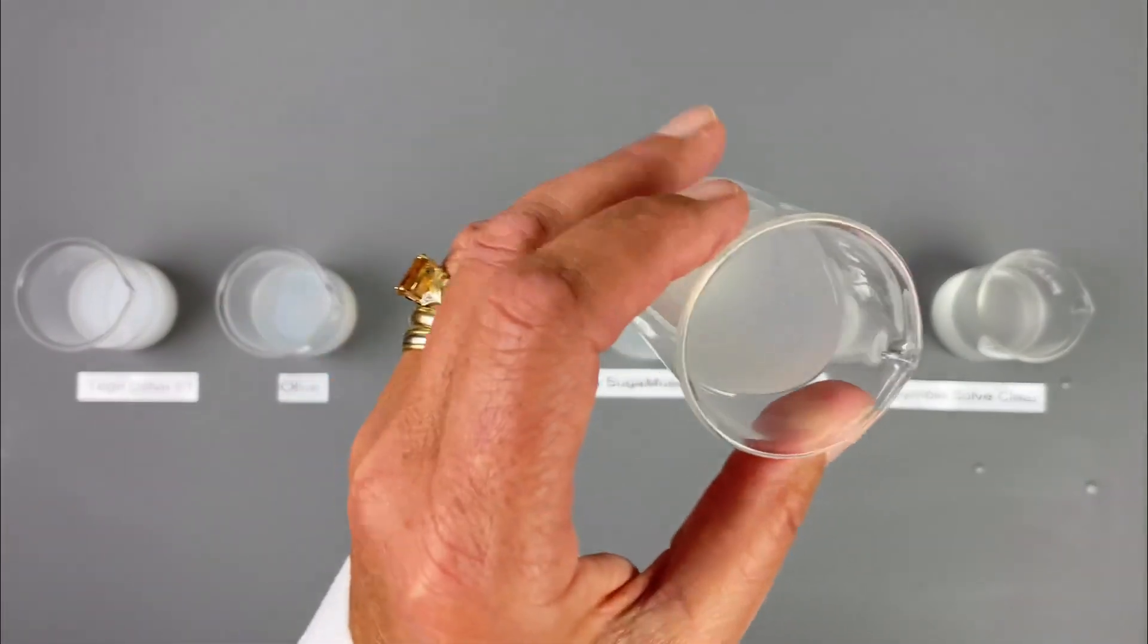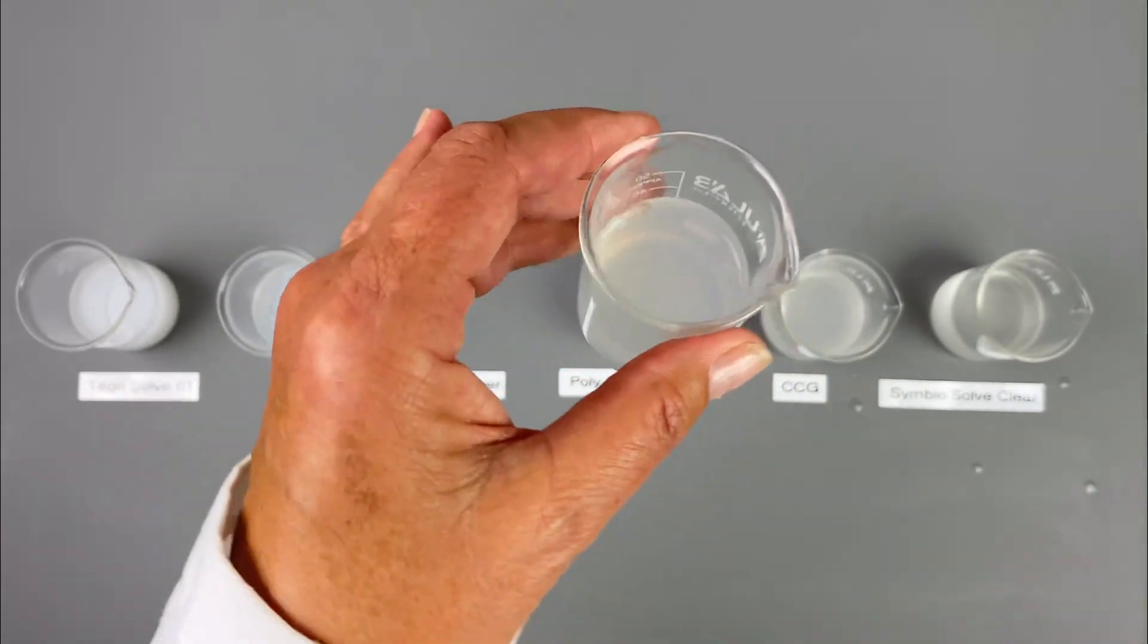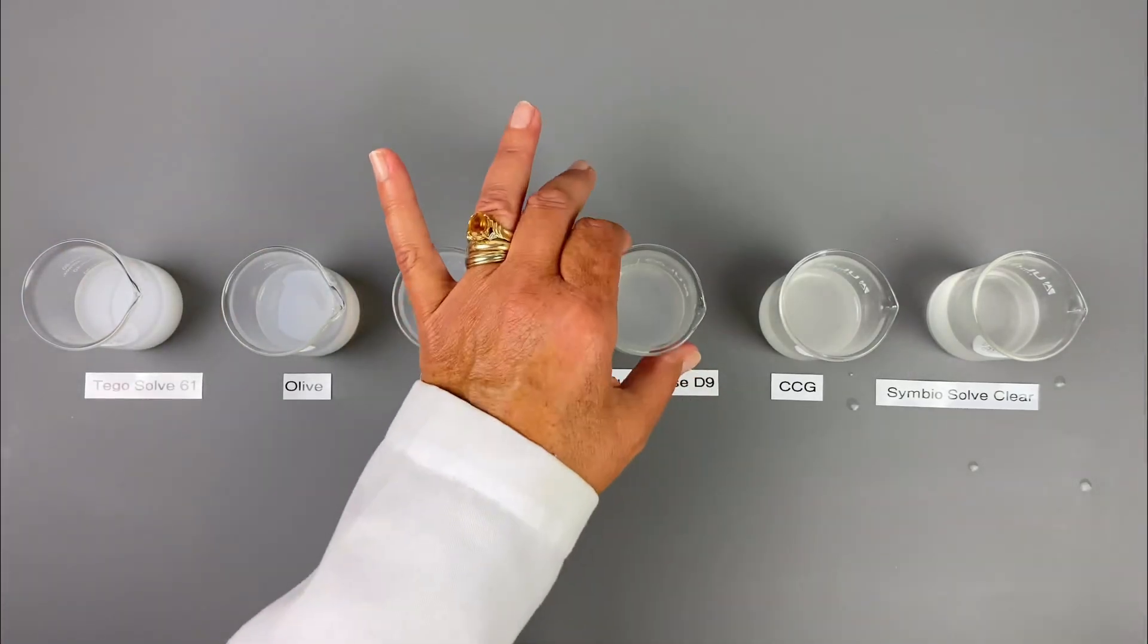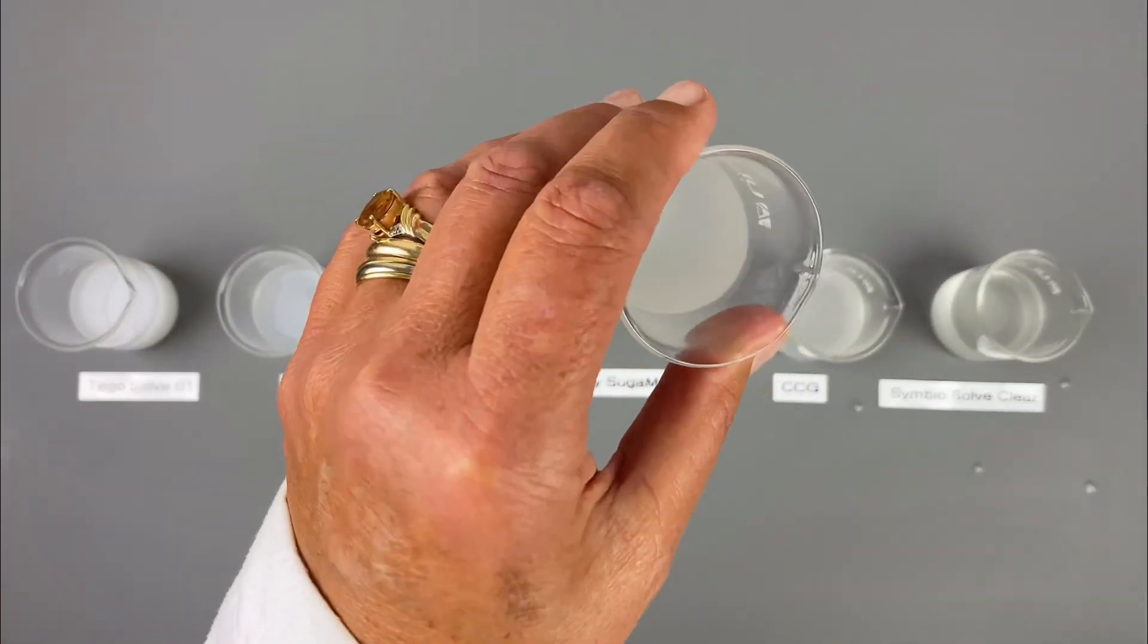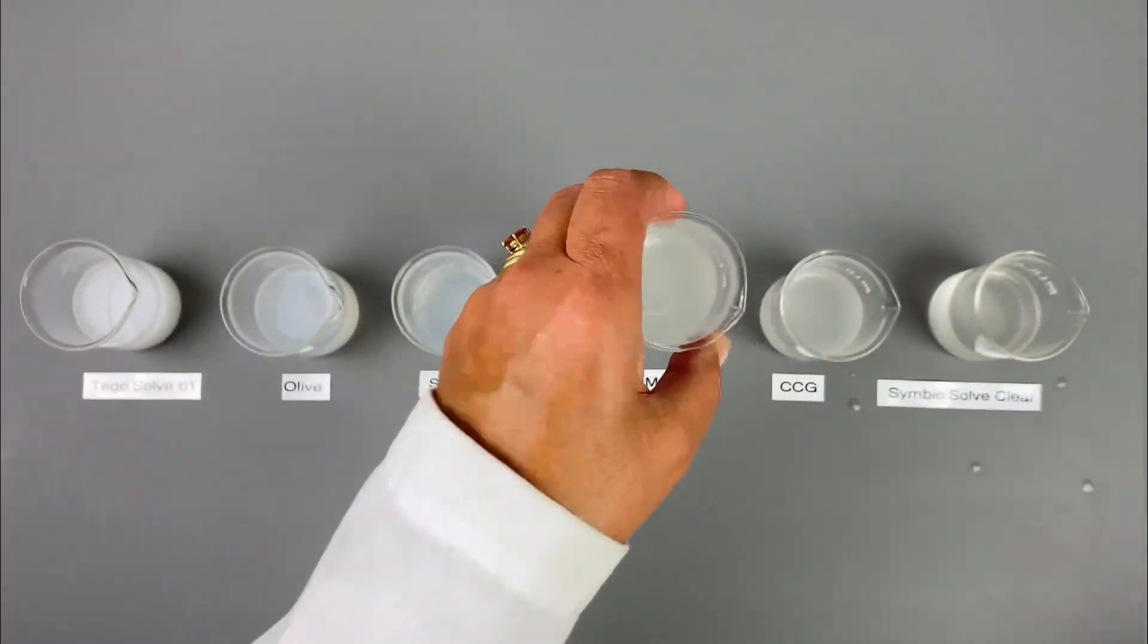The sunflower solubilizer has done a great job also. And it is a little bit more transparent than the olive solubilizer. The polysugar mousse has a hazy, low cloudiness to it, but it did great at solubilizing the essential oils.